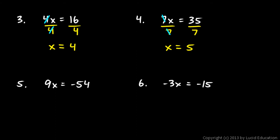Number 5: 9x equals negative 54. This 9 and this x are multiplied, so to get rid of the 9, I need to divide. I have to do the same thing on each side, so divide both sides by 9, and you get x equals negative 54 divided by 9, which is negative 6.